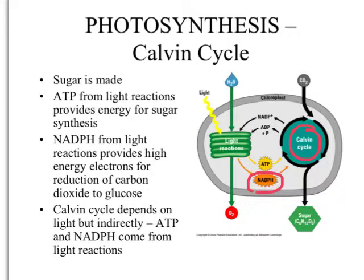In the second stage — the Calvin cycle — sugar is actually made. The ATP from the light reaction provides energy for sugar synthesis, and the electrons stored in NADPH enable the reduction of carbon dioxide into glucose. The Calvin cycle is indirectly dependent on light because it needs those high-energy molecules from the light reactions. Some plants concentrate on light reactions during the day, storing ATP and NADPH, and then run the Calvin cycle at night when the sun goes down to turn all that energy into sugar.